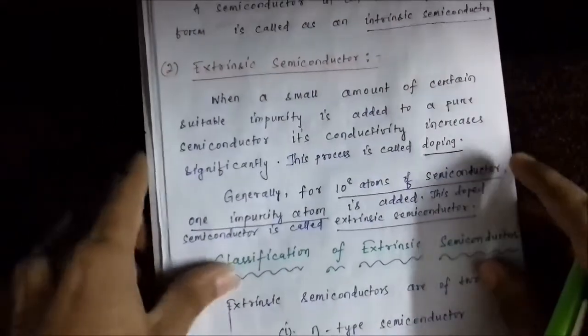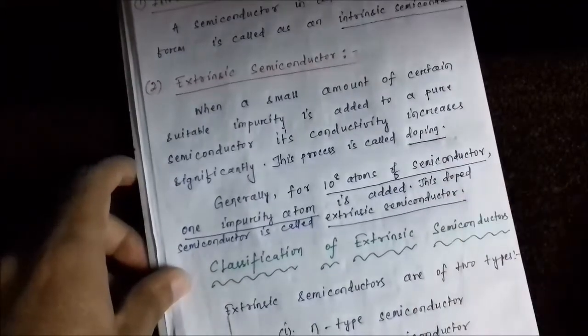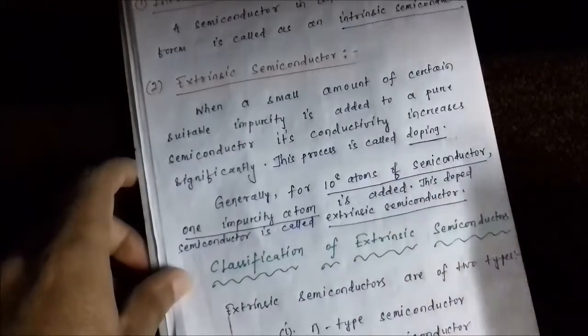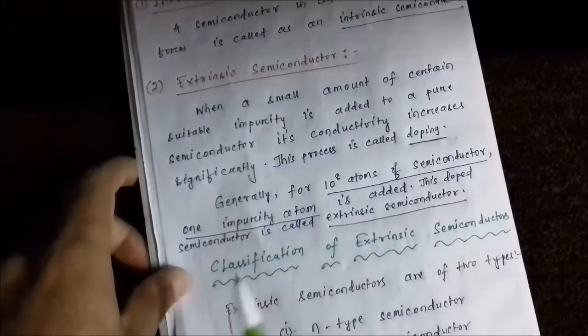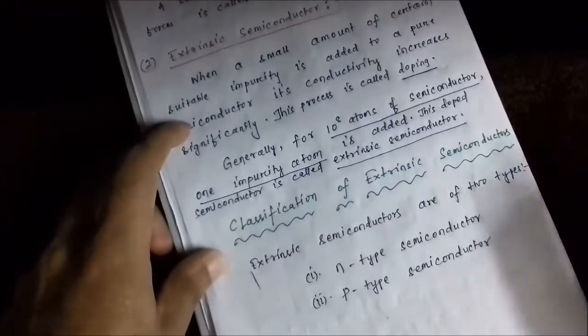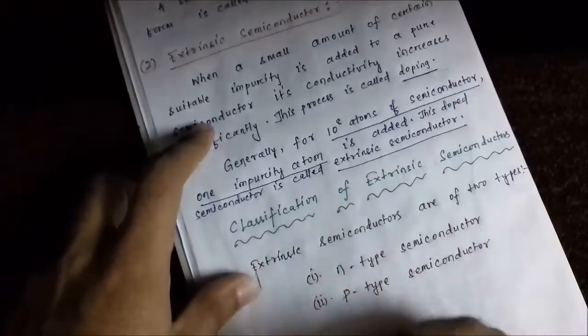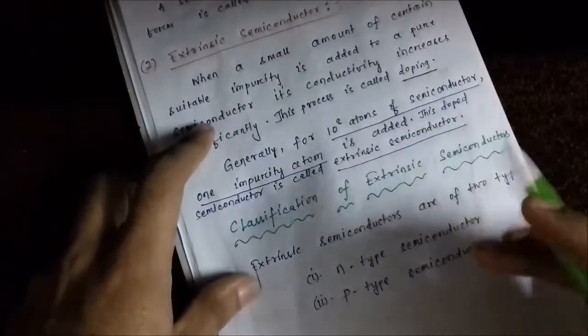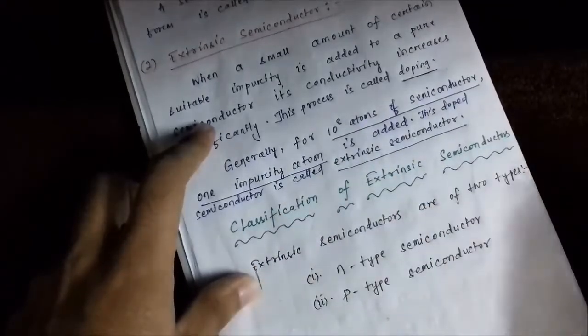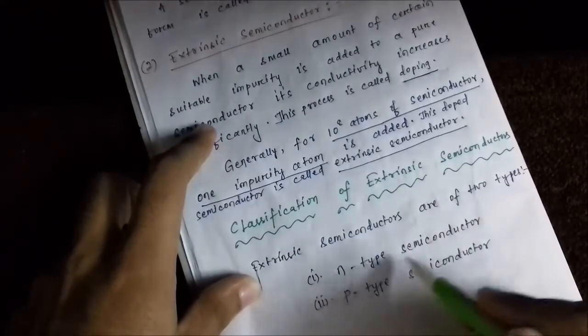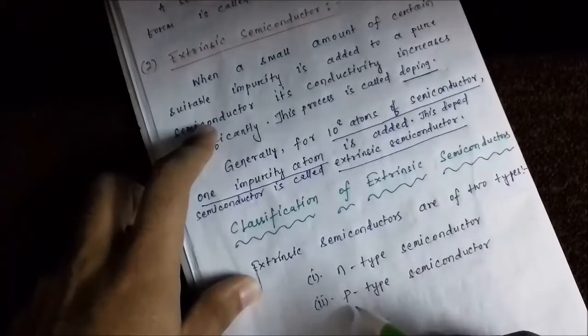Next, we have the classification of extrinsic semiconductors — that is, impurity-added semiconductors. This classification is done in terms of the type of charge carriers involved. The extrinsic semiconductors are of two types: N-type semiconductor and P-type semiconductor.